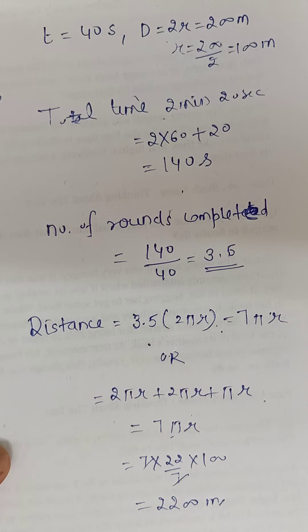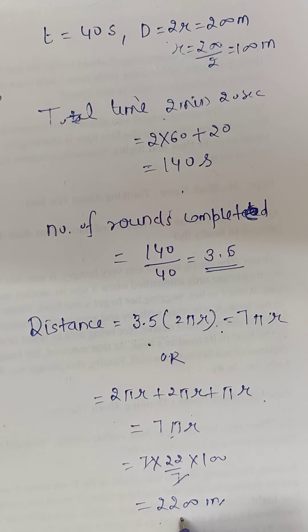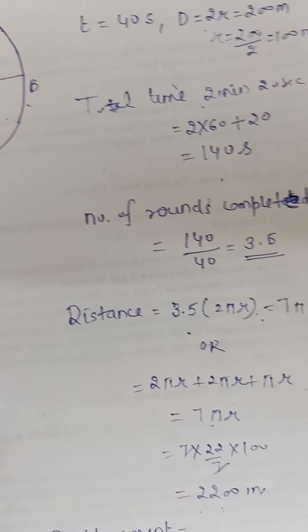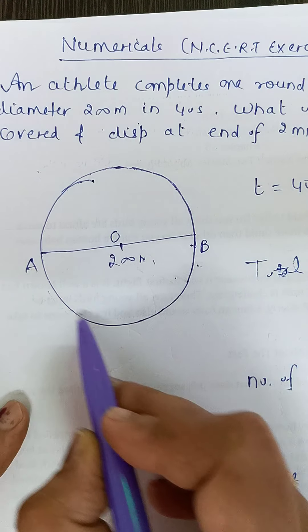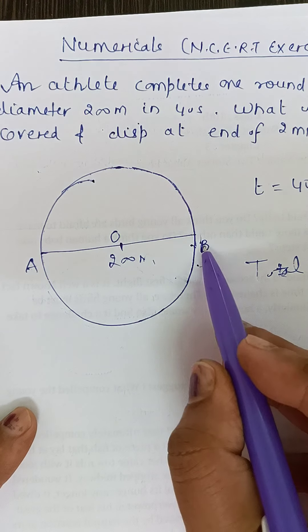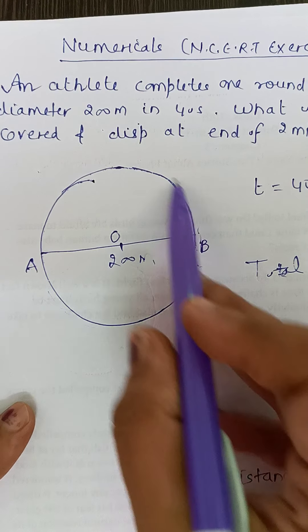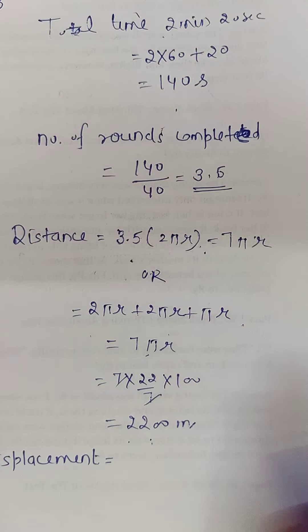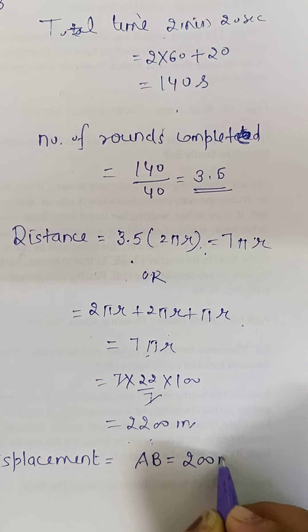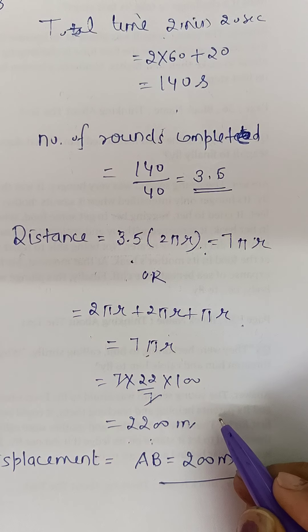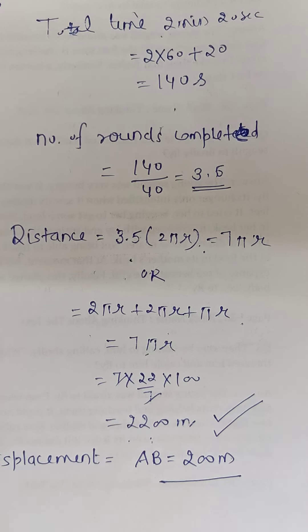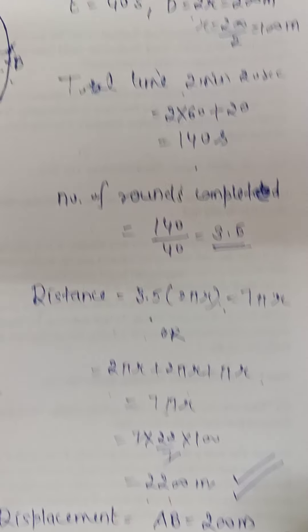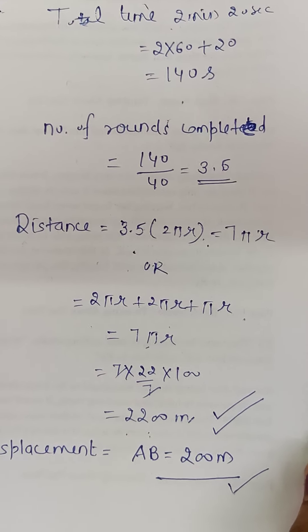Put the value of π as 22 by 7 and radius is 100, so distance covered will be 2200 meter. So after 3 and a half rounds, distance covered is 2200 meter. Now for displacement, see after each round final and initial position coincide. One round starting from B, coming back to B, displacement is zero. Second round B to B, zero. Third round B to B, zero. The half round remaining gives displacement from B to A, which is the diameter, this is 200 meter. So distance is 2200 meter and displacement is 200 meter after time of 2 minute 20 seconds.